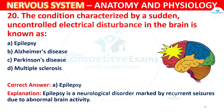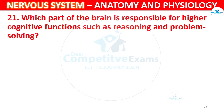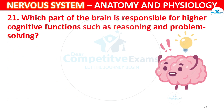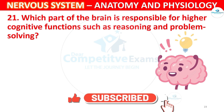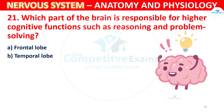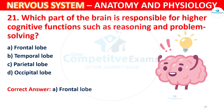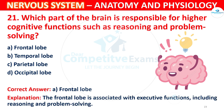Question 21: Which part of the brain is responsible for higher cognitive functions such as reasoning and problem solving? Options: A) Frontal lobe, B) Temporal lobe, C) Parietal lobe, D) Occipital lobe. The correct answer is A, Frontal lobe. The frontal lobe is associated with executive functions including reasoning and problem solving.